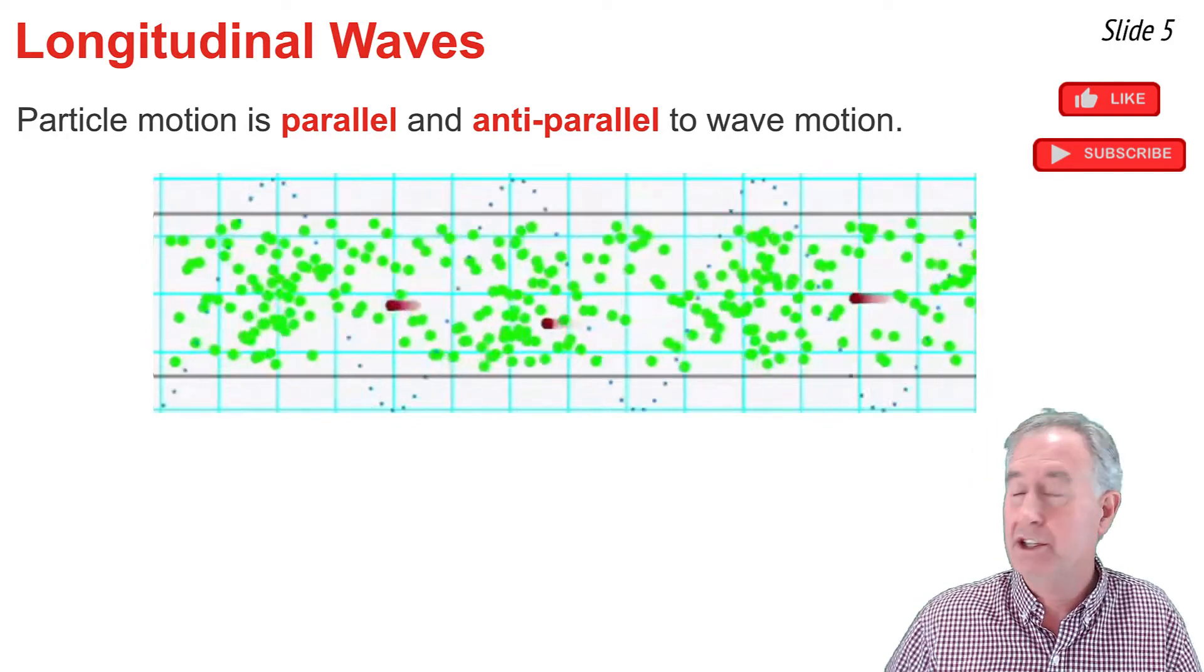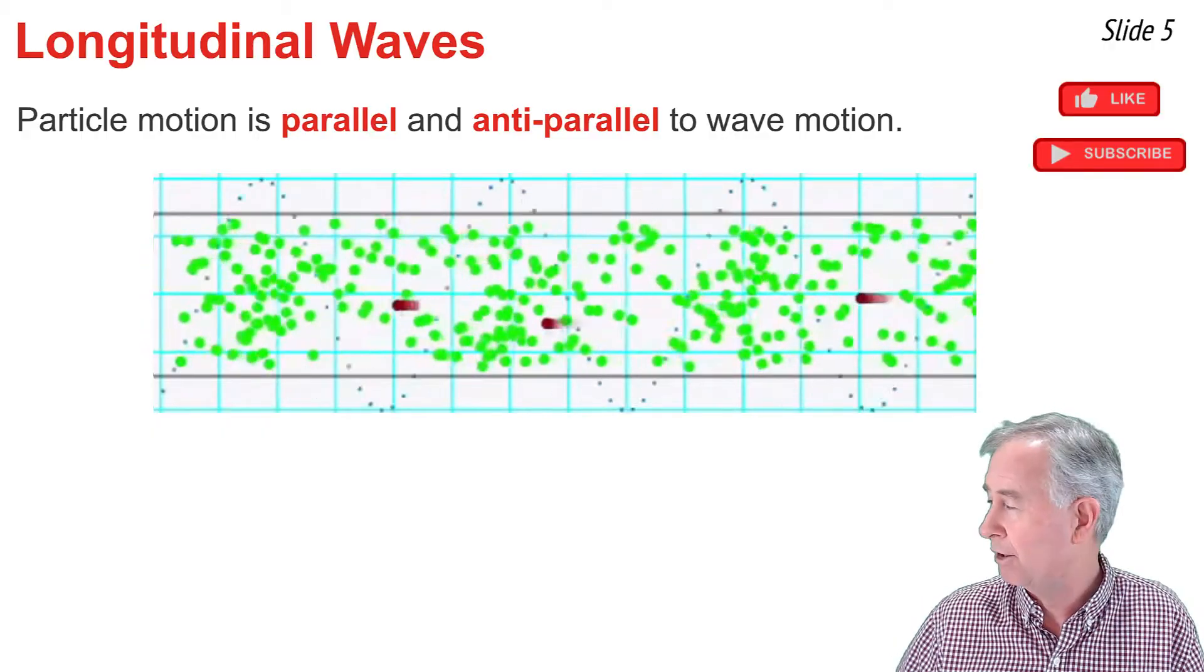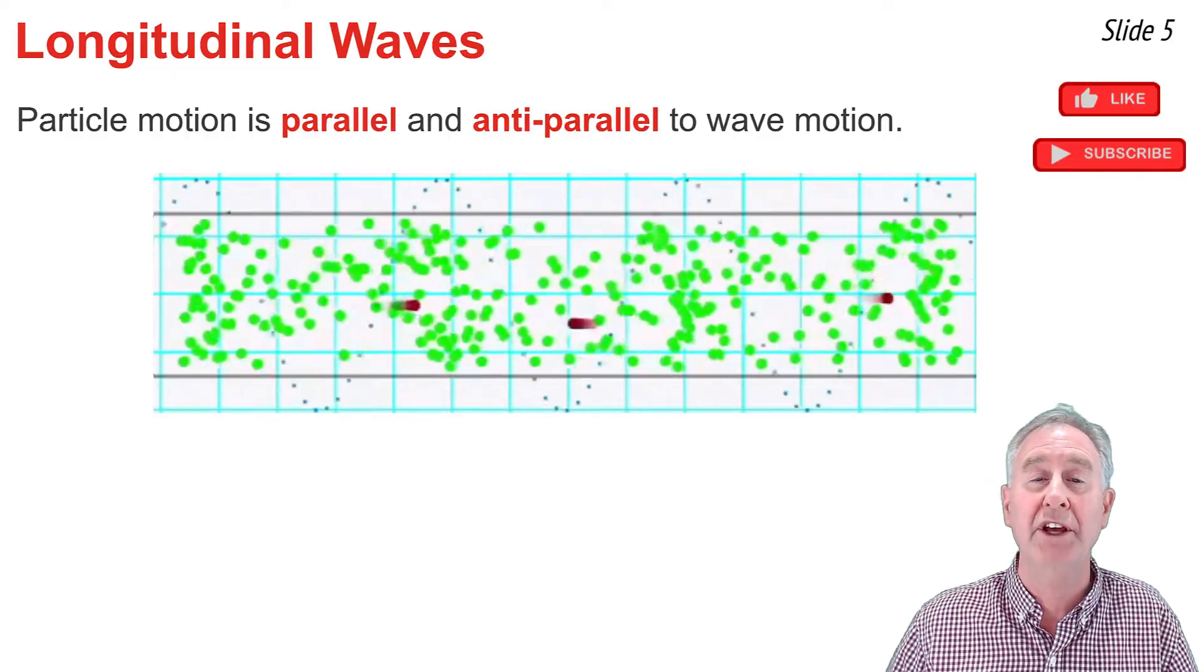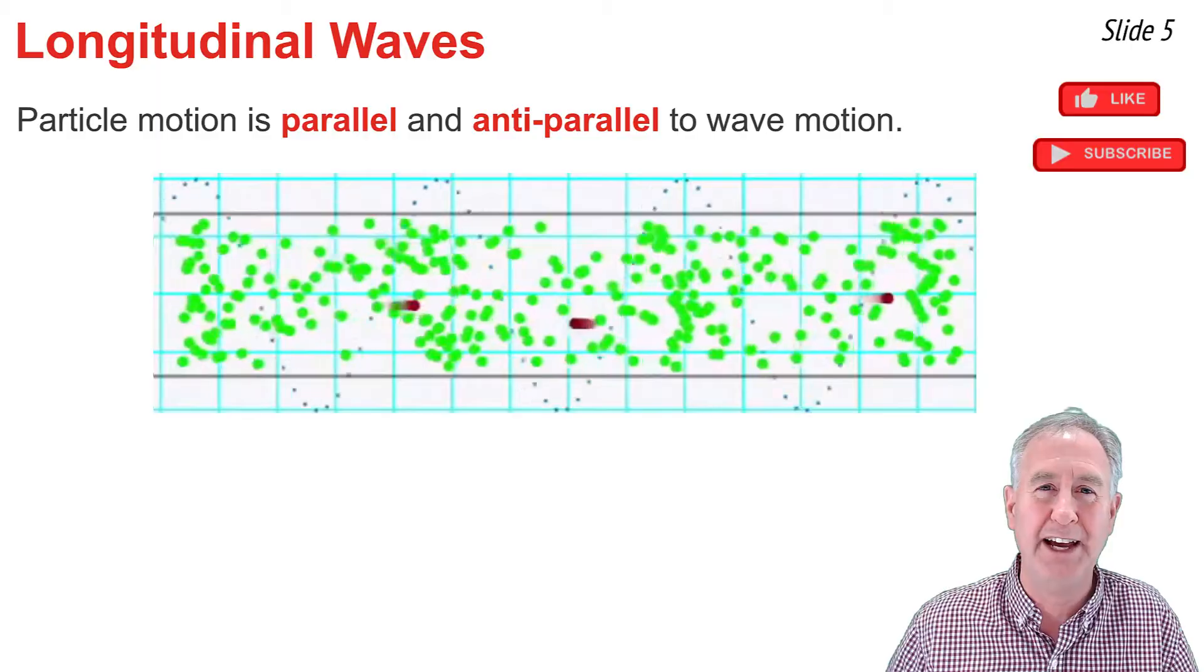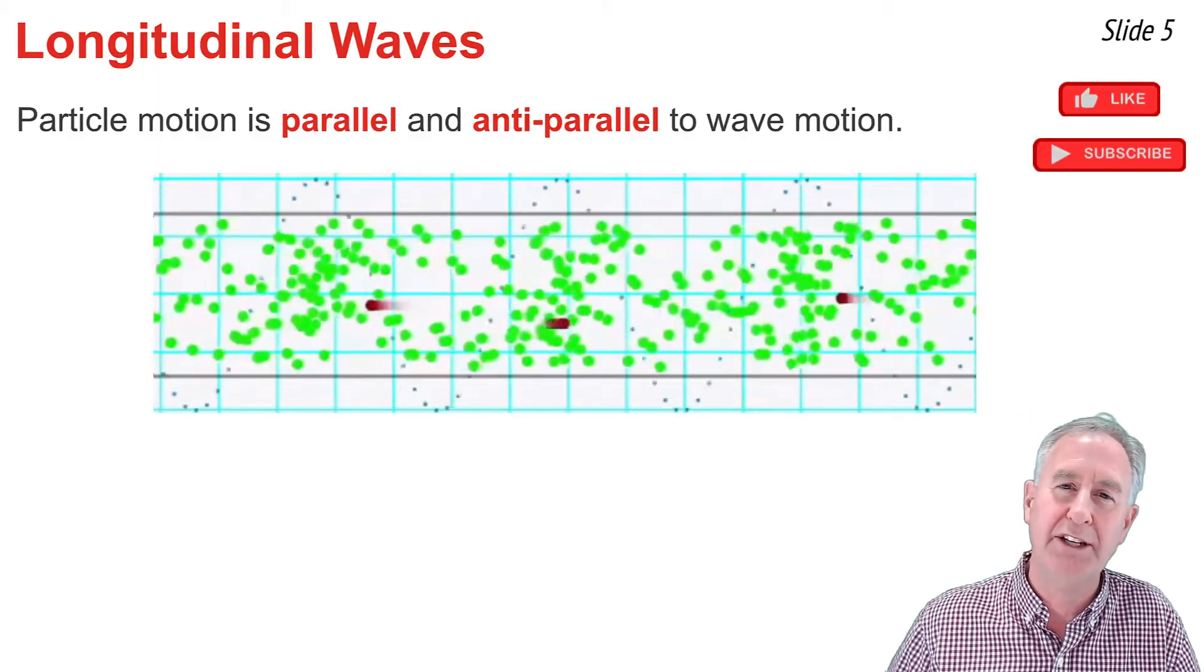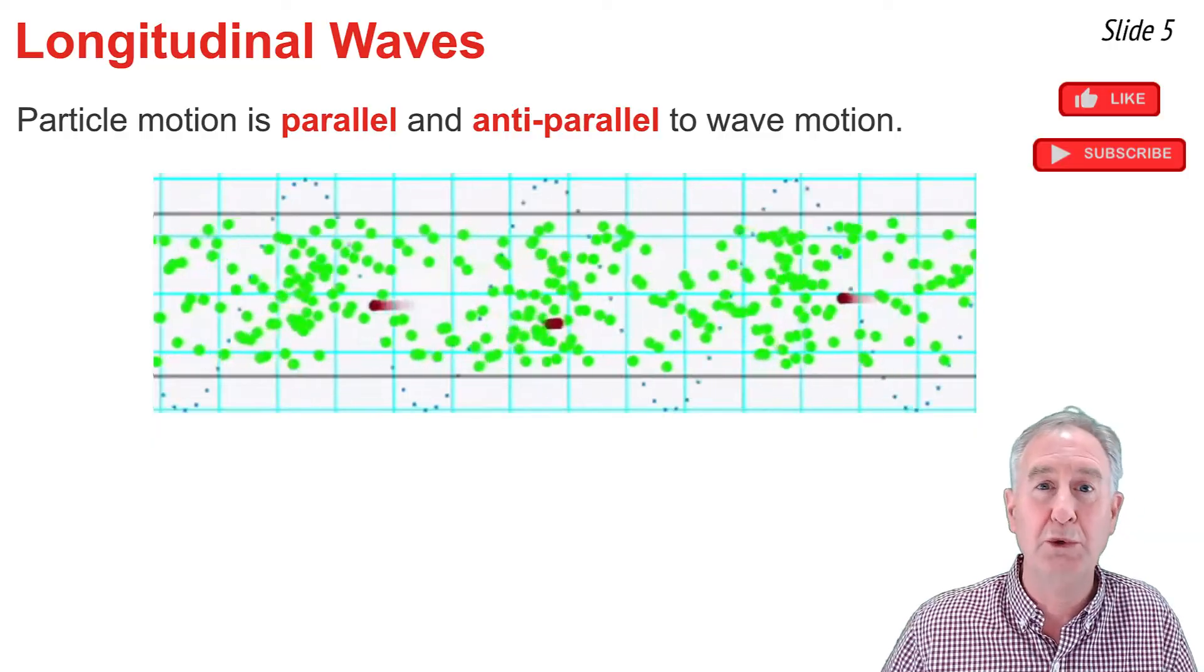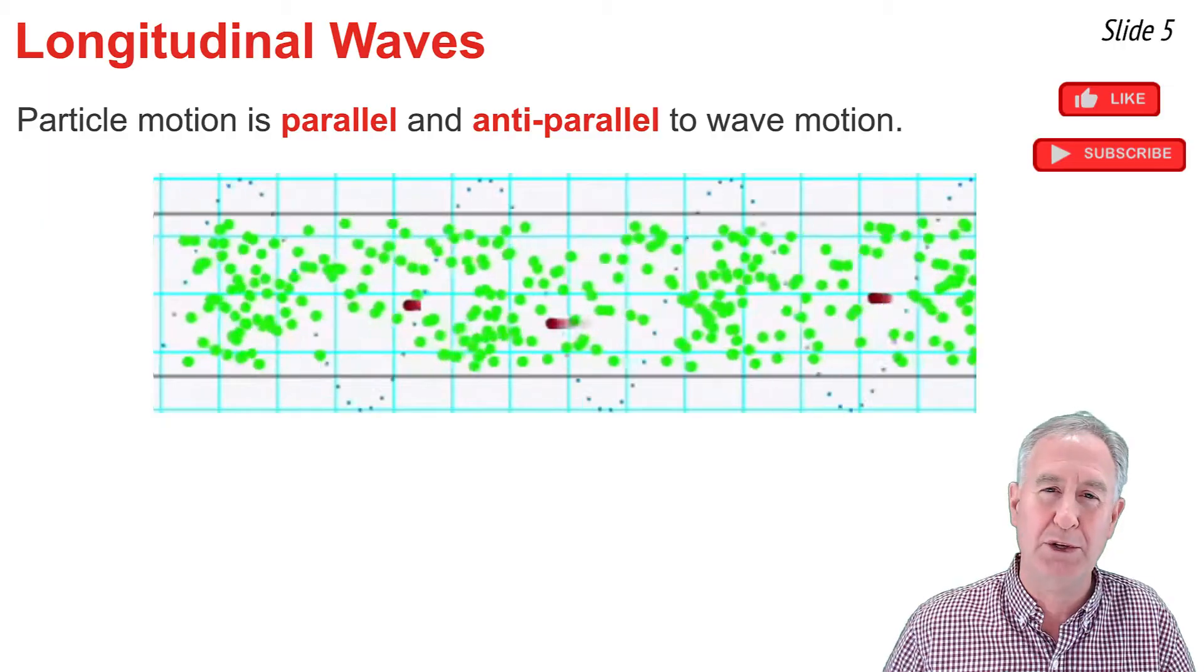In this animation, you'll see three red dots, which represent three of the many particles of the medium. If you focus on one of the red dots and look which way the particles are moving, you'll notice that they're vibrating horizontally from left to right and right to left as the wave moves from the left end of the medium to the right end of the medium. This is a case of a longitudinal wave with the particle motion parallel and anti-parallel to the direction of wave motion.